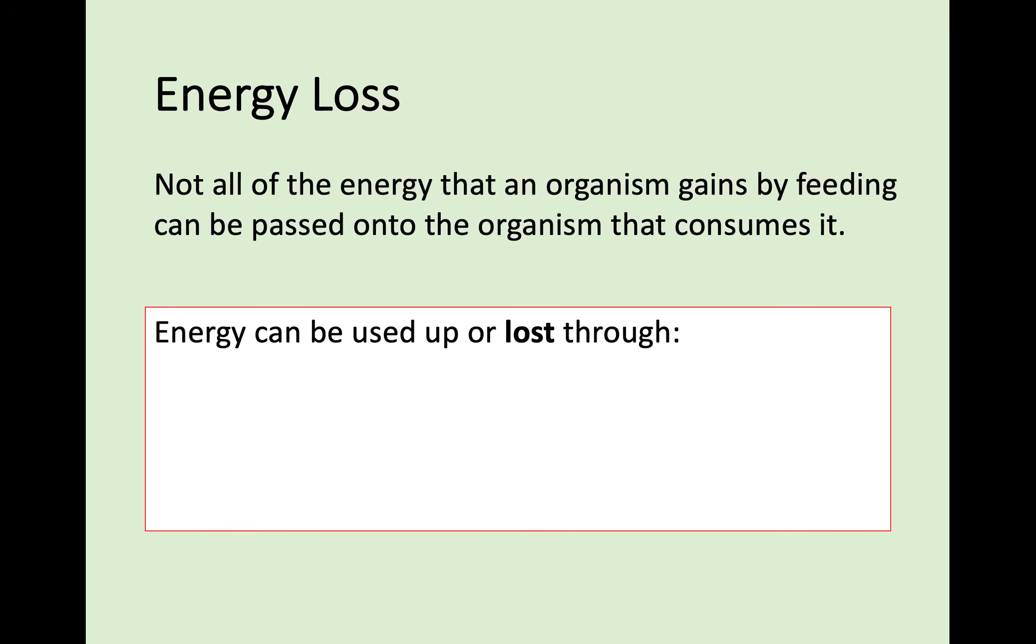To start off with, not all of the energy that an organism gains by consuming another organism is actually passed on to that organism. Quite a lot of energy is lost through three different ways, and you need to know all three of them. It can either be lost through maintaining or generating body heat, through movement, maybe running away from a predator, or through undigested material like dead skin, bones, or poo—anything that is not being passed on to the organism that consumes you, that's lost energy.